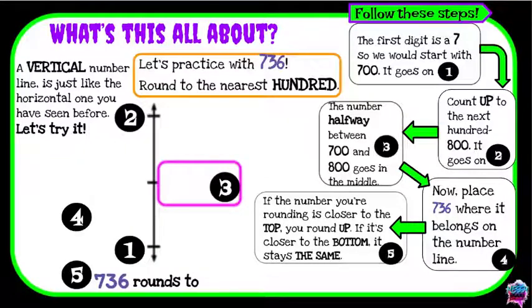So what's this all about with the vertical number line? Let's check it out and see how to set it up. We're going to practice using the number 736 and we're going to round 736 to the nearest hundred.